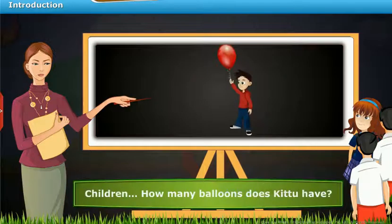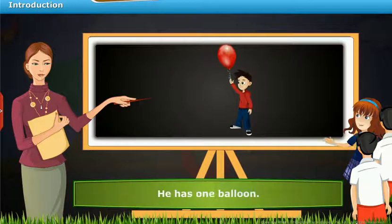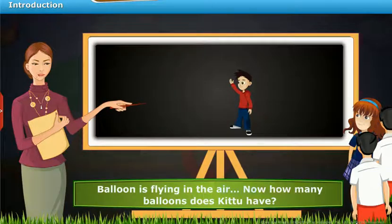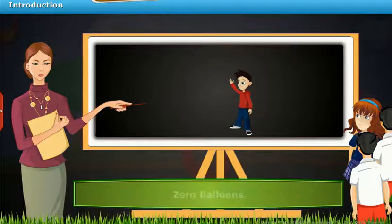Children, how many balloons does Kitu have? He has 1 balloon. The balloon was flying in the air. Now, how many balloons does Kitu have? 0 balloons.